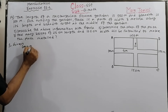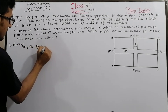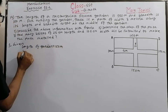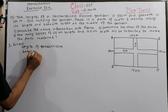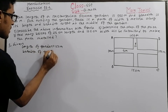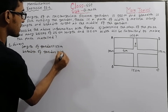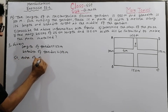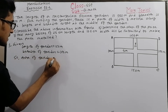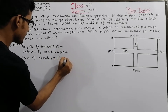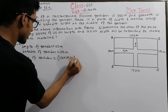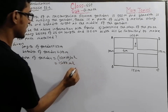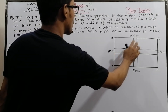Length of the garden is 150 meters and breadth of the garden is 100 meters. So area of garden equals 150 into 100 square meters, which equals 15,000 square meters.